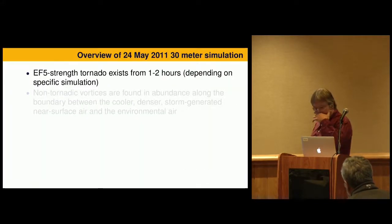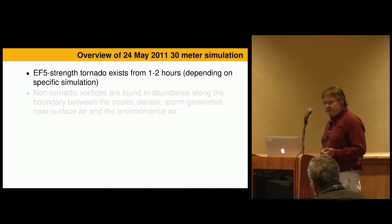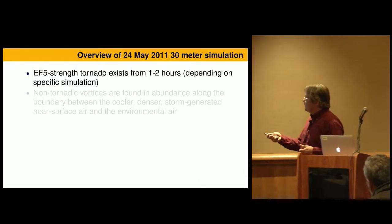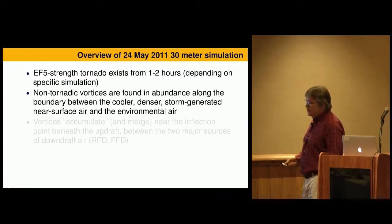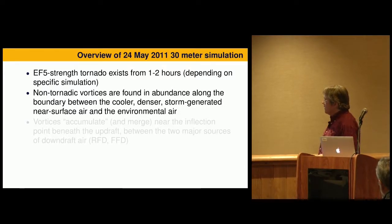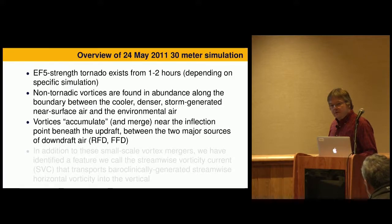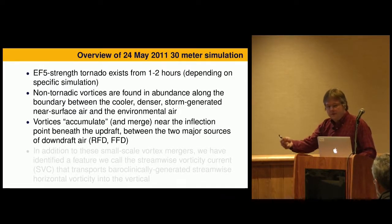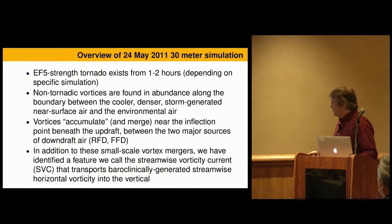Overview of the simulation: we have an EF5-strength tornado that exists for one to two hours, depending on the exact simulation. One common feature in just about all these simulations is we have non-tornadic vortices that precede the tornado, which seem to provide vorticity to help it form and maintain it. This occurs along the boundary between the storm's cold pool and the environment ahead of it. These accumulation processes are things you would never be able to see at lower resolution — just like you can't get sea surface temperatures right with a hurricane without high ocean resolution.